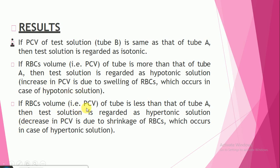If the PCV of tube B is less than that of tube A, the test solution is regarded as hypertonic. In this case, there will be a decrease in the PCV due to shrinkage of the RBCs, which occurs in the case of a hypertonic solution. These are the final results.